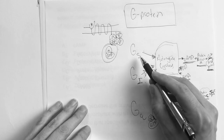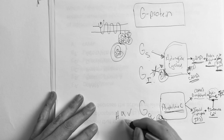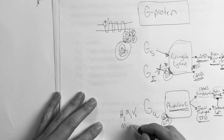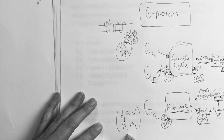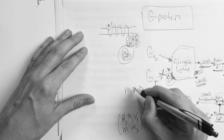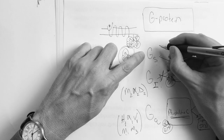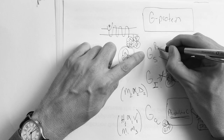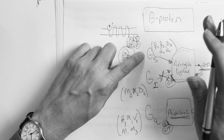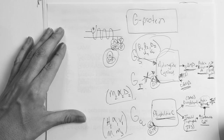Now remember the receptors. For G-Q: think 'HAVE 1 M&M' — Histamine 1, Alpha 1, V1, M1, and M3. For G-inhibitory: think 'MAD 2s' — M2, Alpha 2, D2. Everything else is G-stimulatory: Beta 1, Beta 2, D1, H2, V2. There's no mnemonic for G-stimulatory — it's just everything else. So: HAVE 1 M&M for G-Q, MAD 2s for G-inhibitory, everything else is G-stimulatory.